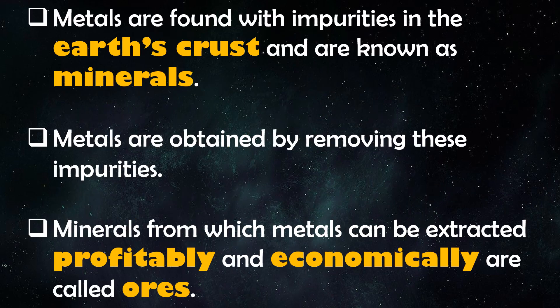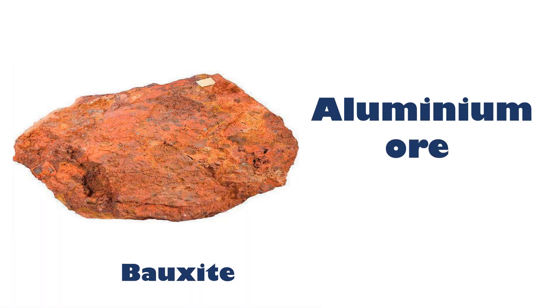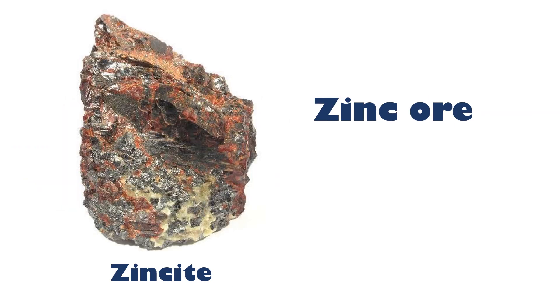Metals are found with impurities in the earth's crust and are known as minerals. Metals are obtained by removing these impurities. Minerals from which metals can be extracted profitably and economically are called ores. Hematite, bauxite, and zincite are some examples of ores.